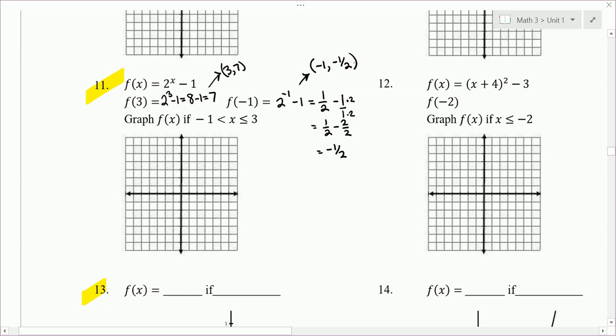All right, so I'm going to graph this without the restrictions first. Notice the translation, we've been dropped down 1. We've got a horizontal asymptote, so our horizontal asymptote dropped down 1. Parent graph point was at 0, 1, now it's at 0, 0. And then we have a couple points. We know this goes through 3, 7, and negative 1, negative 1 half. And so we know this looks something like that without the restriction.